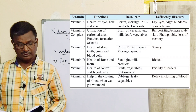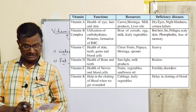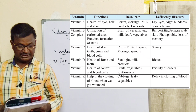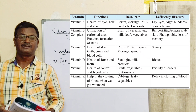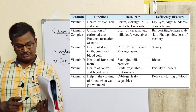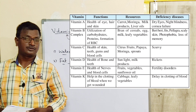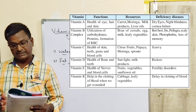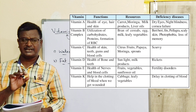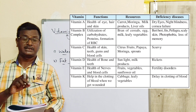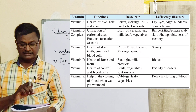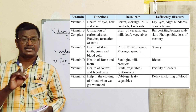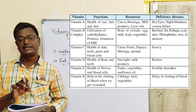In our textbook, vitamins A, B complex, C, D, E, and K are given. There is one table showing vitamins, functions, sources, and deficiency diseases. This is very, very important — what are the sources of vitamins, what are the functions, and in the deficiency condition, what diseases occur.